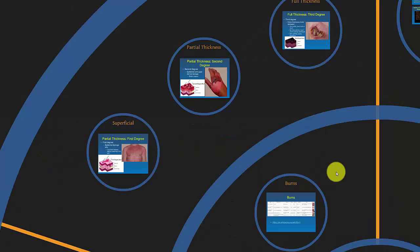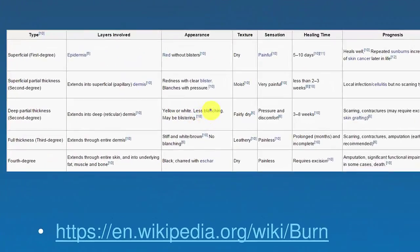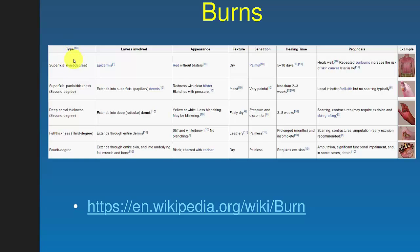Now we've got burns. There are different classification systems. Looking at it based on depth: superficial means it's only the epidermis; going deeper means it's into the dermis; and full thickness goes through the entire dermis. Another way to classify is first degree, second degree (two subtypes), third degree, and fourth degree. Most often these days, the terms used are superficial, partial thickness, and full thickness.